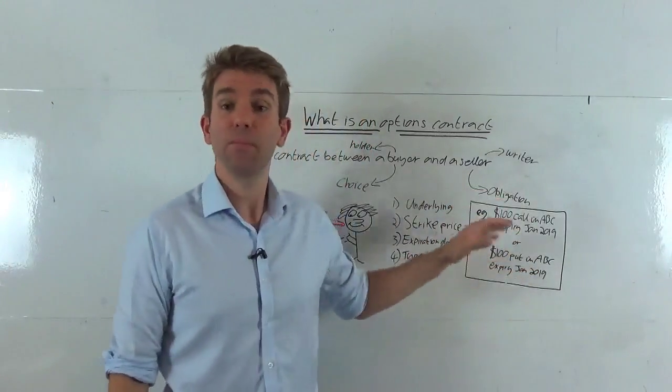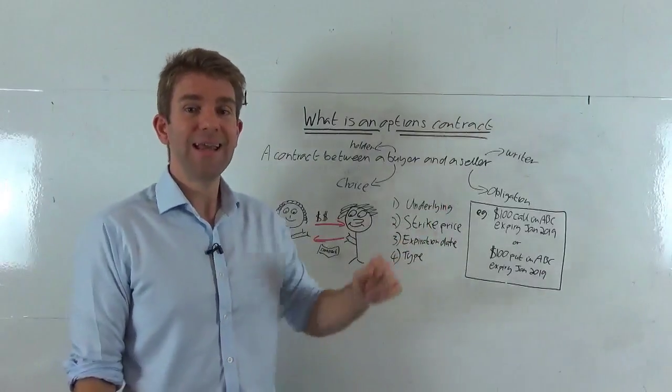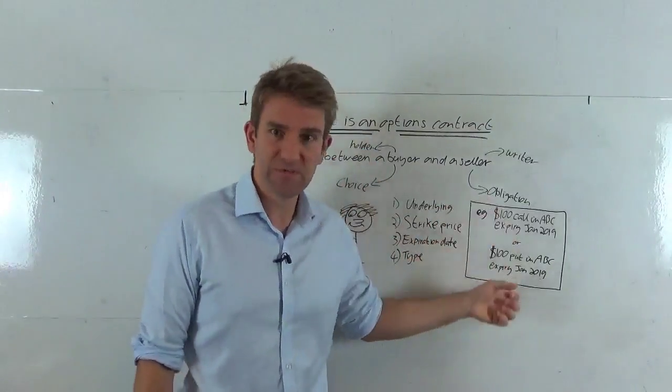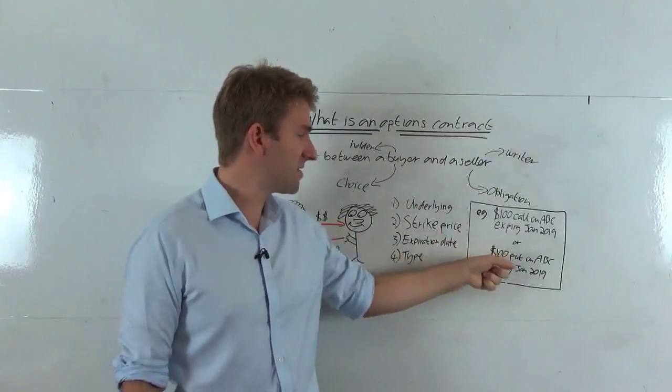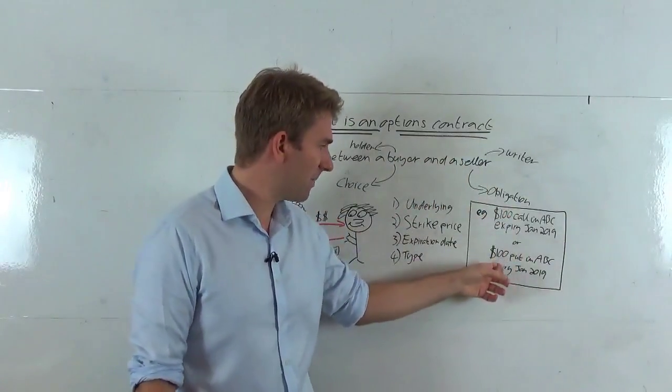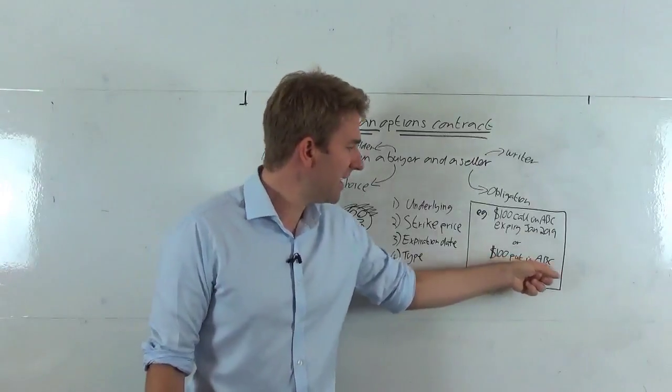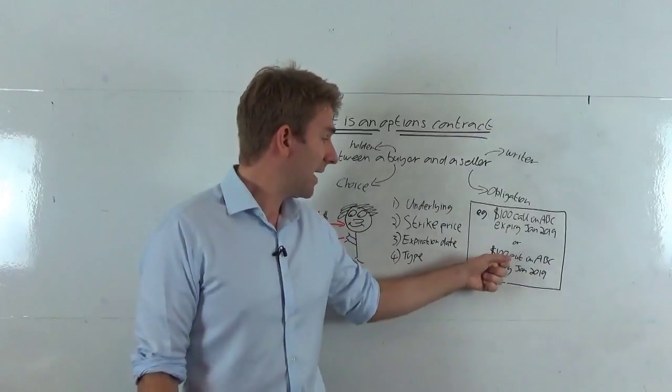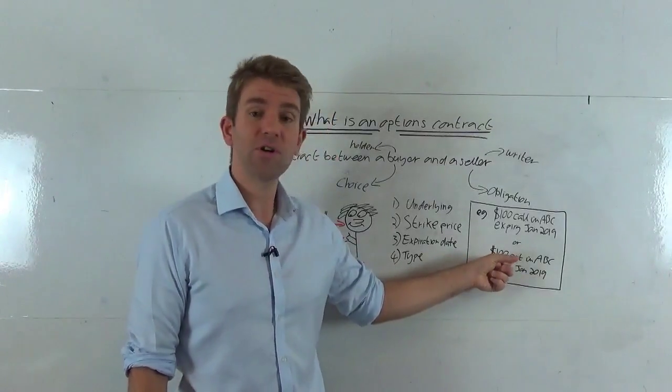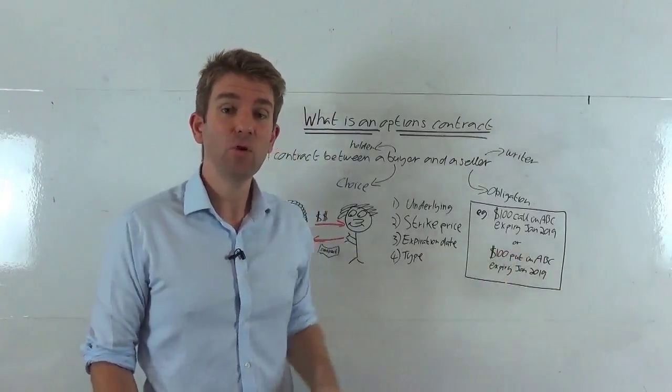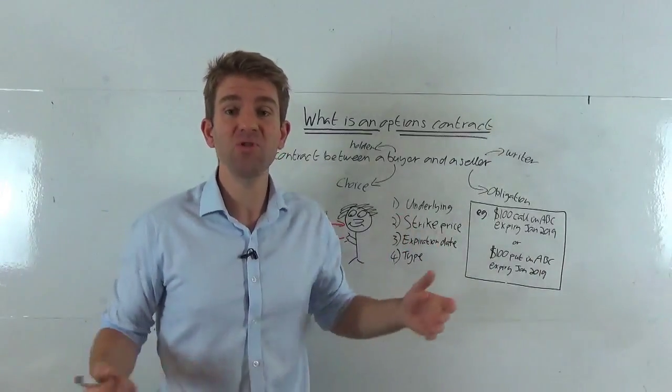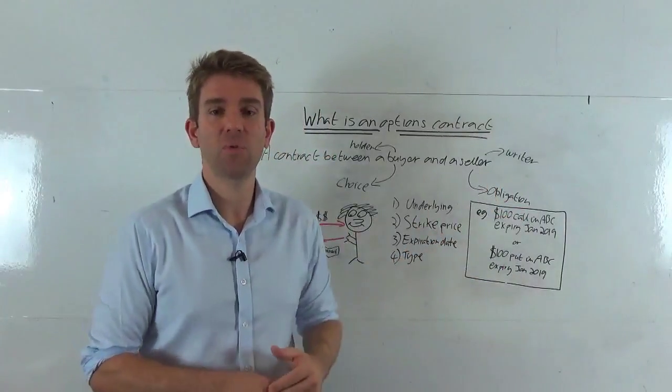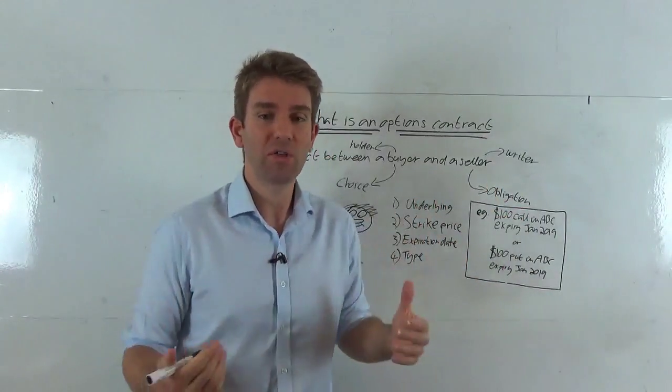Let's look at another example in terms of a put. So a put option is the option to sell the underlying asset at a specific price at a specific expiry day in the future. In this case, again, for ease of comparison, $100 in ABC stock expiry January 2019. Let's look at those examples again. So January 2019, the stock is trading at $110. If you've got the right or the option to sell that stock at $100, would you take it? No. It's pointless. You can get it in the market at $120. All of a sudden that option becomes worthless.